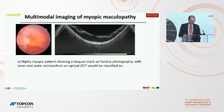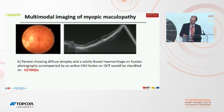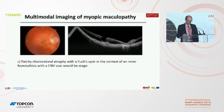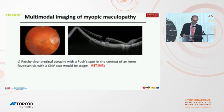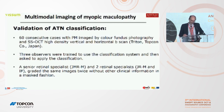A high myopic patient showing a lacquer crack on fundus photography with inner and outer retinal schisis on OCT would be classified as A1, T2, N1. Another patient showing diffuse atrophy and a Fuchs spot on fundus photography with an active CNV lesion on OCT would be classified as A2, T0, N2A. Another with patchy chorioretinal atrophy, a Fuchs spot, inner foveoschisis, and a CNV scar would be staged as A3, T1, N2S. We validated this classification with 60 consecutive cases imaged by fundus photography and swept-source OCT high-density vertical and horizontal B-scans with Triton.